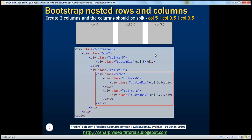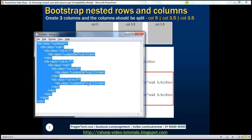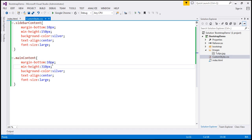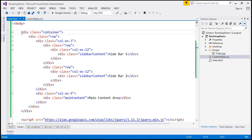Let's now look at the HTML required. We want a single row within our container, and within that one row we want two columns. The first column is five logical units wide and the second column is seven logical units wide. Within our second column we have a single nested row, and inside that nested row we have two columns, each six logical units wide — giving us 3.5 for the first column and 3.5 for the second column. I have this exact same HTML in a notepad, so let's copy and paste it into index.html.